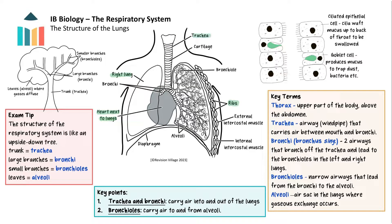The trachea carries air between the mouth and the lungs. It has horseshoe-shaped rings of cartilage to keep it open. There are goblet cells and ciliated epithelial cells lining the trachea. The goblet cells produce mucus to trap dust particles, bacteria, pollen, and other foreign objects. The cilia then waft the mucus up to the back of the throat where it is swallowed, helping to reduce infections of the lungs.